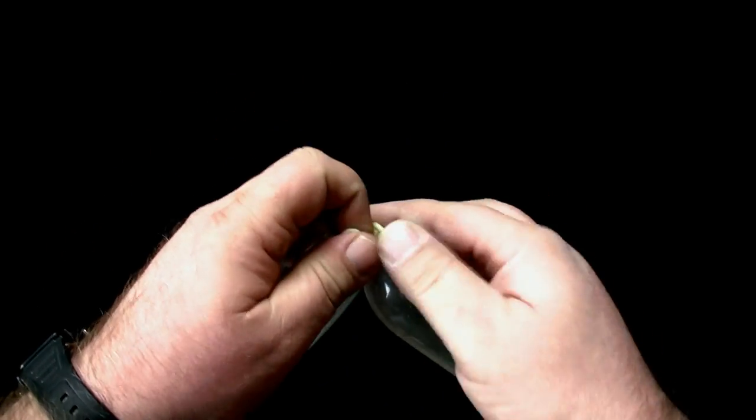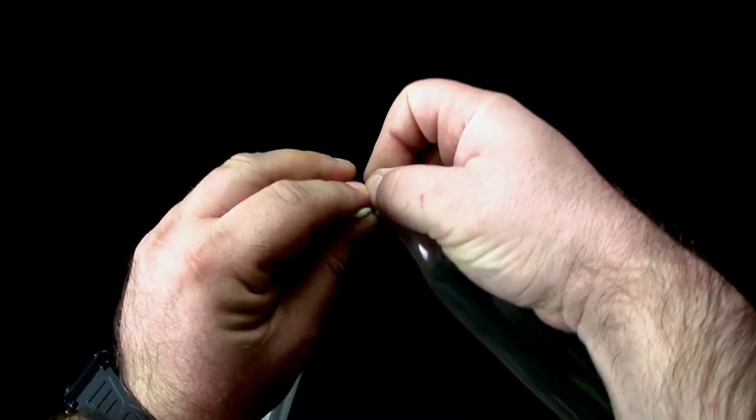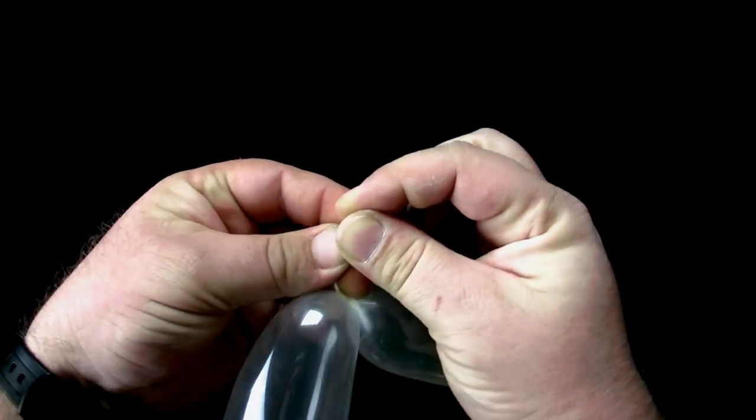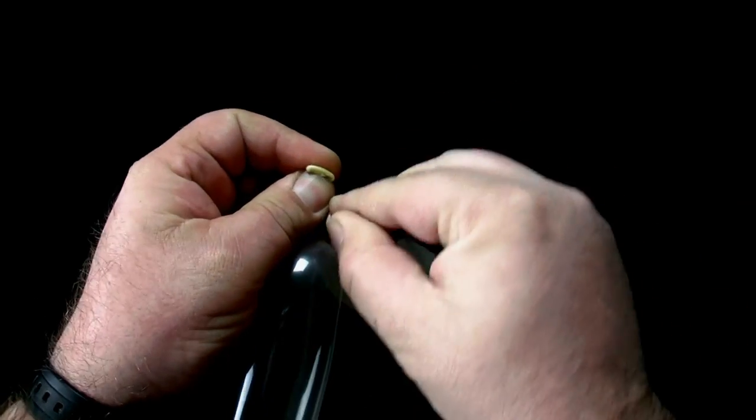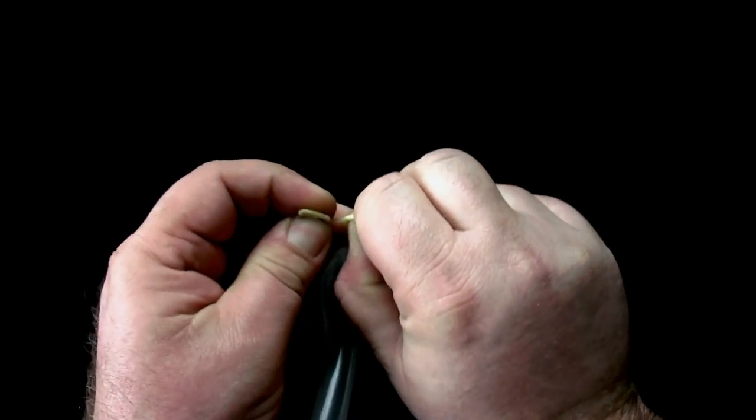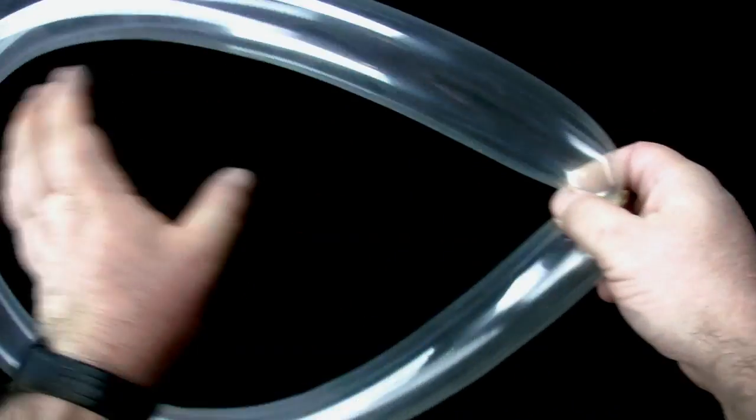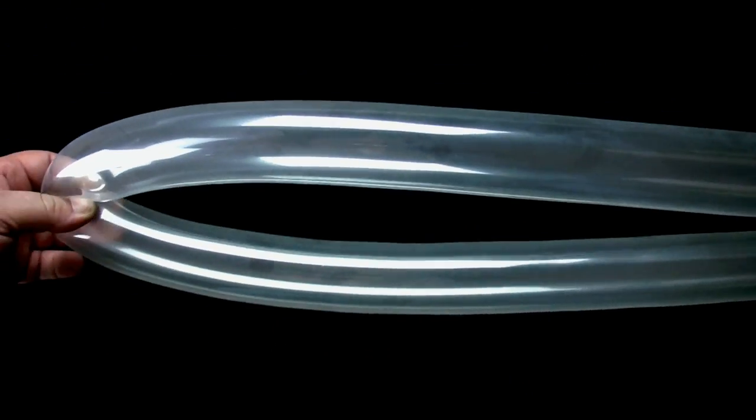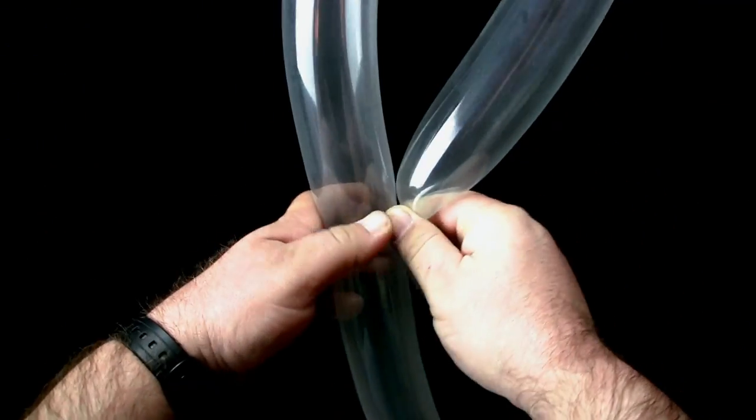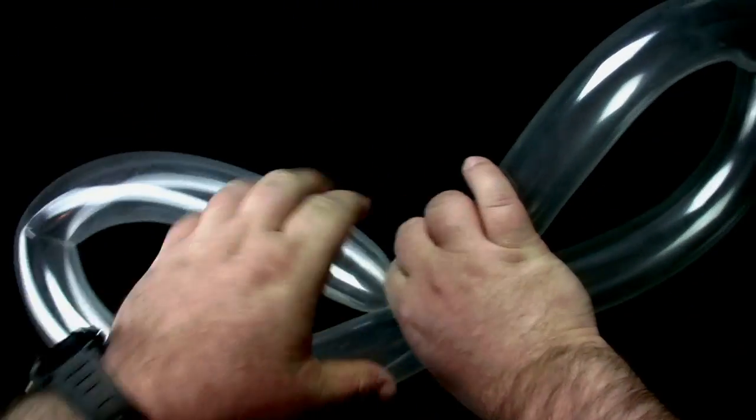Tie the ends of the balloon together. Determine the midway point of the balloon. Fold the balloon in half, holding it in the middle, forming two loops.